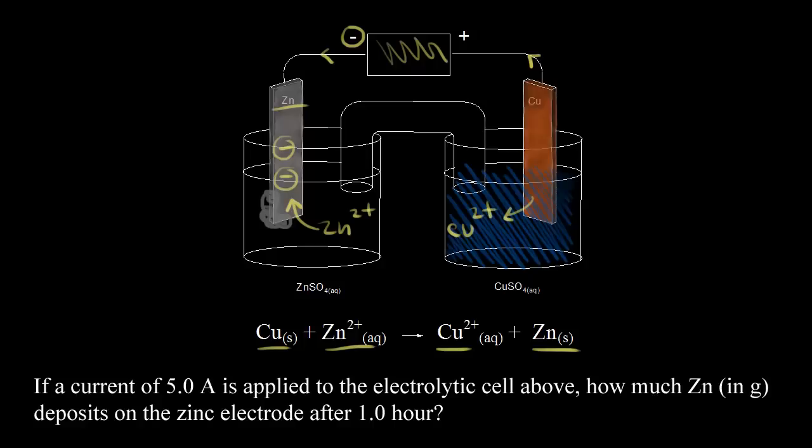When we look at our problem, this is a quantitative electrolysis problem because they're telling us what the current is, 5.0 amps. We're applying a current of 5.0 amps. How much zinc in grams deposits on the zinc electrode after one hour? We have to figure out how much zinc forms on our zinc electrode.